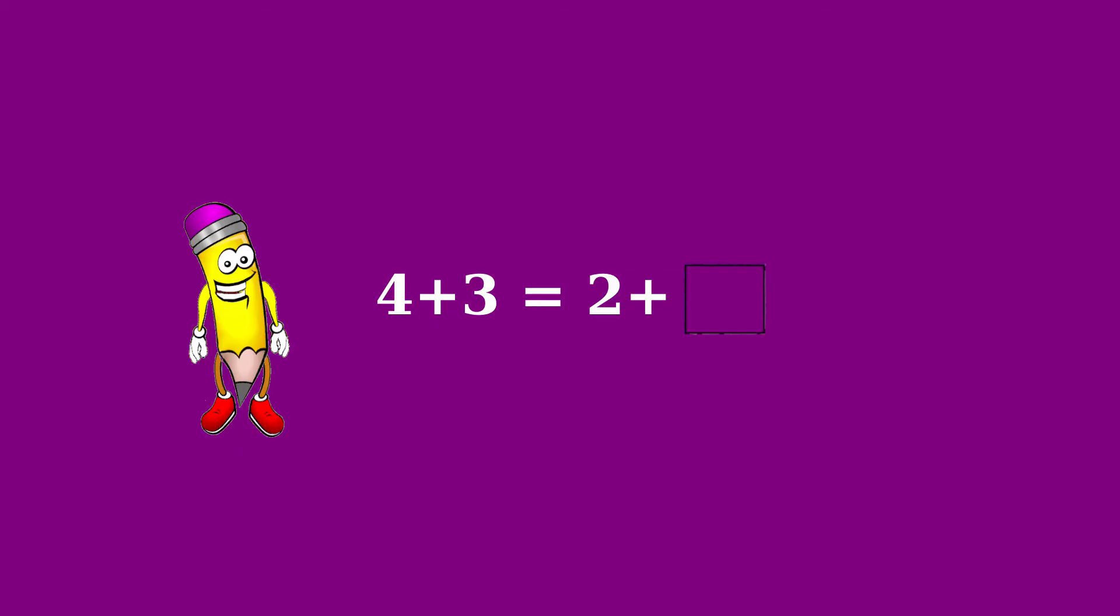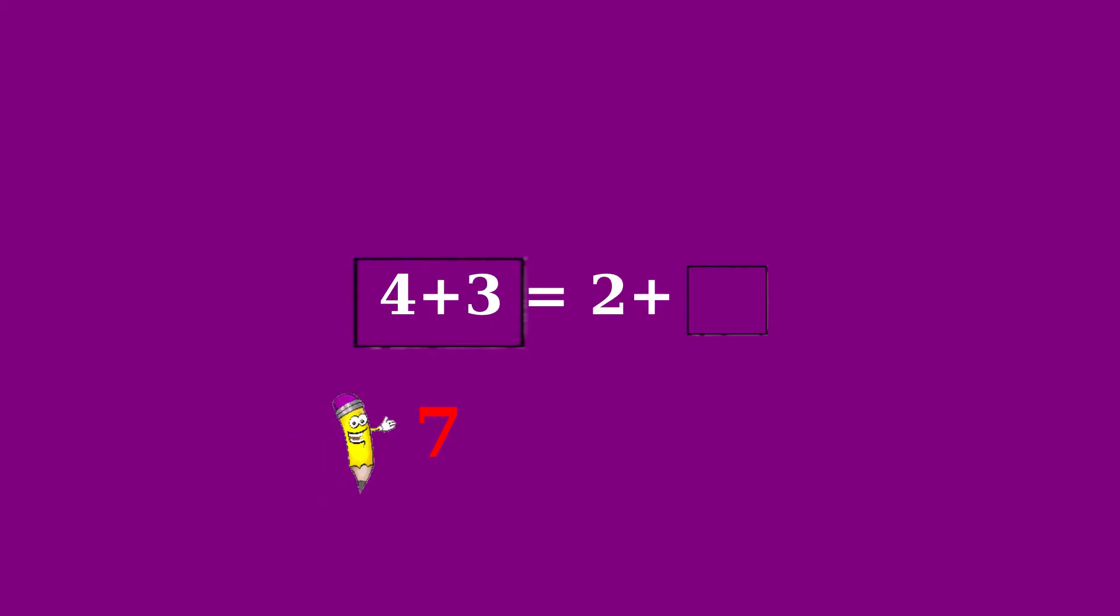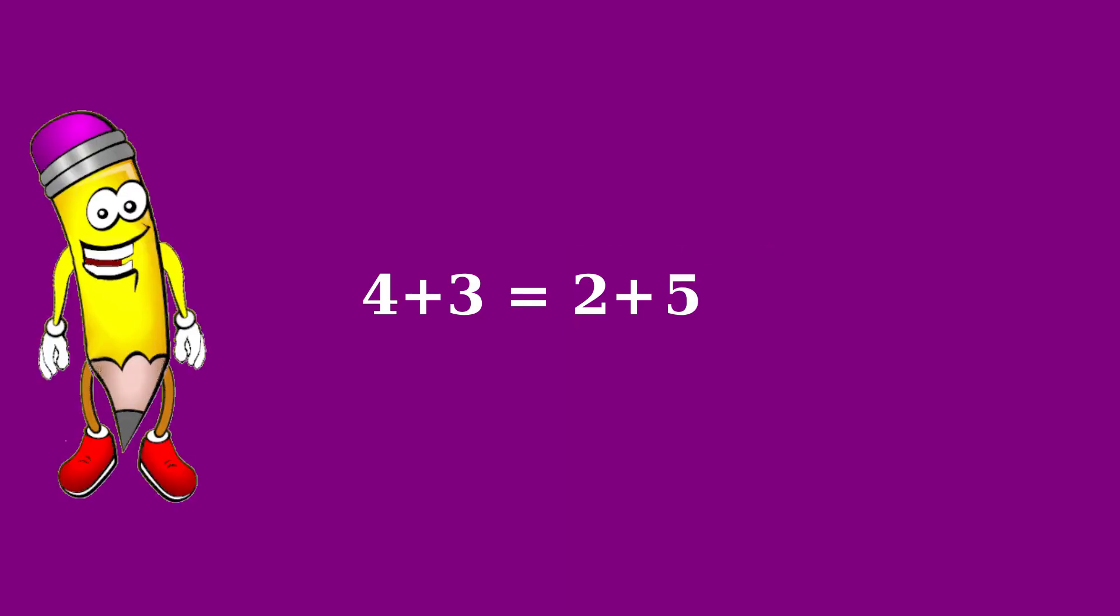The next exercise is 4 plus 3 equals 2 plus something. On the left side, 4 plus 3 equals 7. If we add 5 to the 2 on the right side, we also get 7. Problem solved.